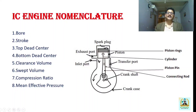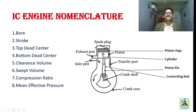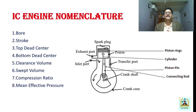Stroke is the distance traversed by the piston in moving from one dead center to another — from top dead center to bottom dead center or vice versa. Top dead center (TDC) is the topmost position the piston can reach. Bottom dead center (BDC) is the bottommost position. In horizontal engines, these are called inner dead center and outer dead center. Clearance volume is the space between the cylinder head and the piston at TDC.